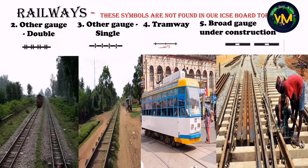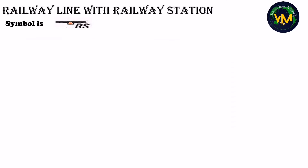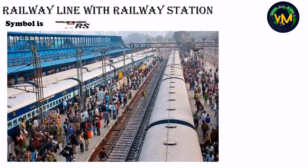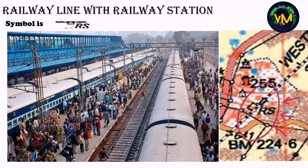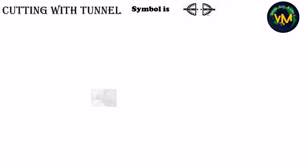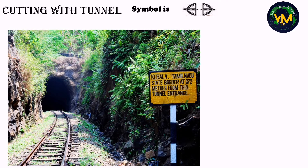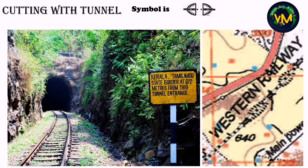Tramways are very popular in West Bengal, especially Kolkata — this is a picture of a tramway and this is the symbol used for it. Broad gauge under construction has a different symbol as well. Railway line with a railway station: near Chitrasani settlement this is present in our topographical map, written with the letters RS, which stands for railway station. Next is cutting with a tunnel — this is a picture of a tunnel on the border of Kerala and Tamil Nadu, and this is the symbol. Again, near Chitrasani settlement in the Western railway main line, you have this cutting with a tunnel.